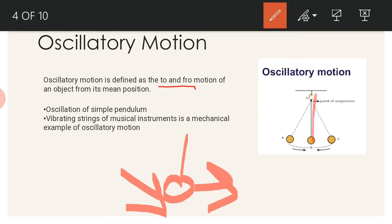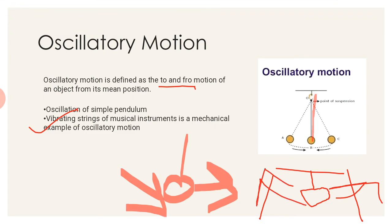Another example of oscillatory motion: vibrating strings of a musical instrument is a mechanical example of oscillatory motion. Also, another example can be the motion of a swing. The seat moves to and fro, so this motion is also oscillatory motion.